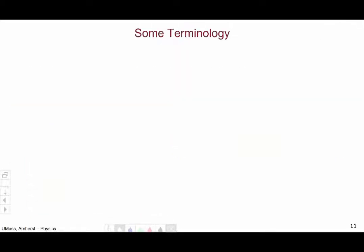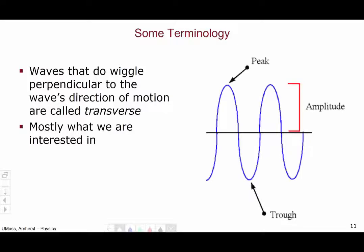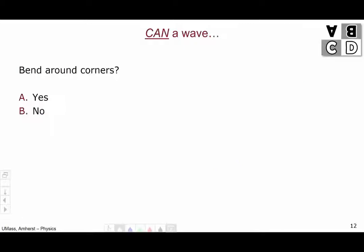Now we need a little bit of terminology. Waves that do wiggle perpendicular to the direction of motion of the wave are called transverse waves. So these are the waves that you probably have in mind, and these are the ones that we're mostly going to be interested in. So some basic terminology of transverse waves, and we'll introduce some more later, are that waves have a peak, what we call a trough, and then the distance from the zero line to either a peak or a trough is called the amplitude.